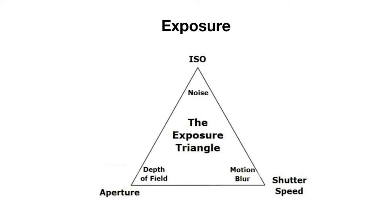Shutter speed refers to how long light is able to enter the camera and expose the sensor. A longer shutter speed will allow more light in, resulting in a brighter, more exposed image, while a shorter shutter speed will let less light in and result in a darker image. Along with this, shutter speed will affect how much motion blur is present in an image. When the camera is allowing light in for longer, if things are moving in the photo, it'll capture that movement as motion blur, while shorter shutter speeds will freeze that moment in time and result in less motion blur.